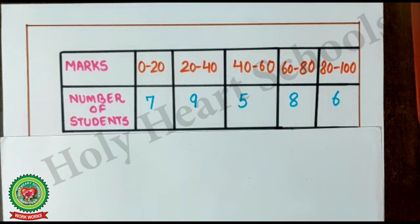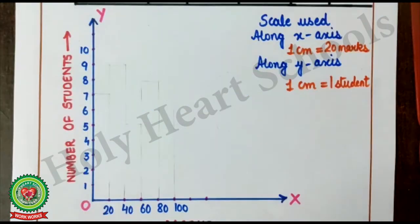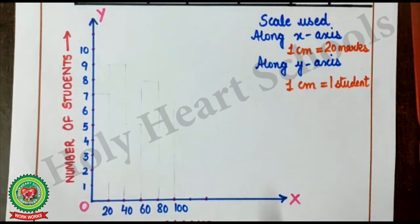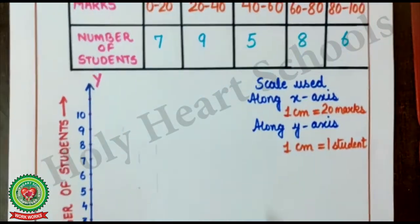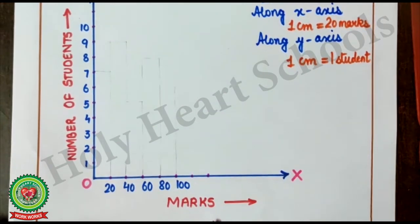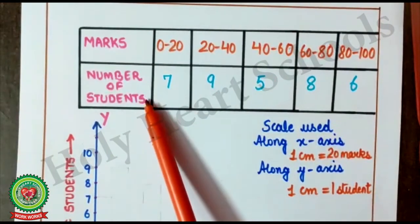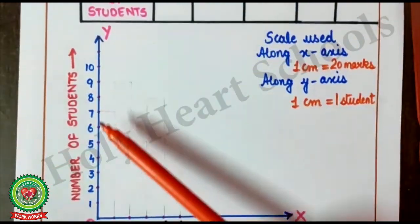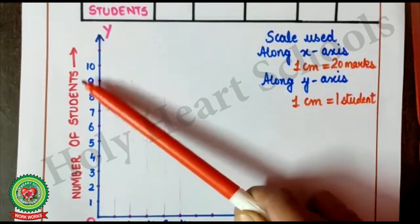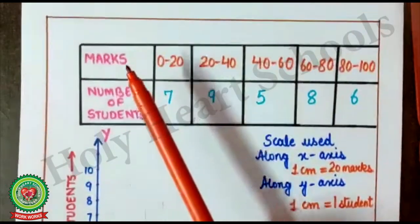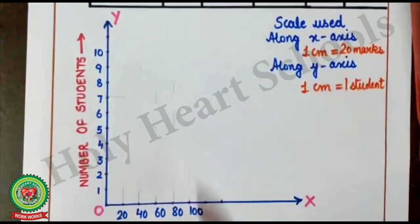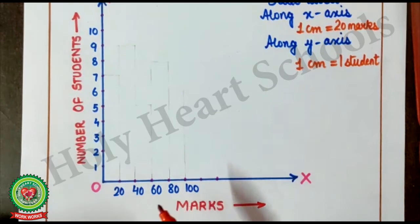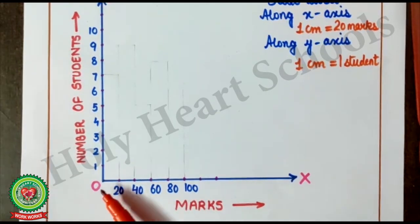Now, we have to draw histogram for given data. Now, step 1. Draw x-axis, Y-axis. And the point where they intersect. That is, origin. Also, we know. First information on x-axis. That means, marks. We will take on x-axis. Second information on y-axis. So, here, number of students. We will take on y-axis. Now, first information. Marks. So, by taking gap of 1 cm. Here, I have taken intervals. 0 to 20, 20 to 40, 40 to 60, 60 to 80, 80 to 100.